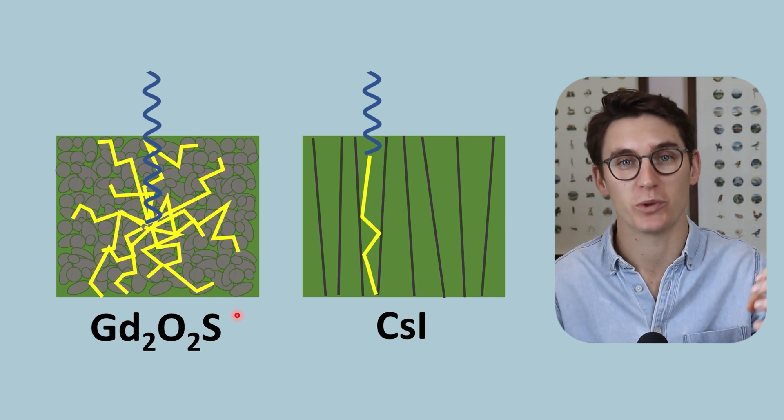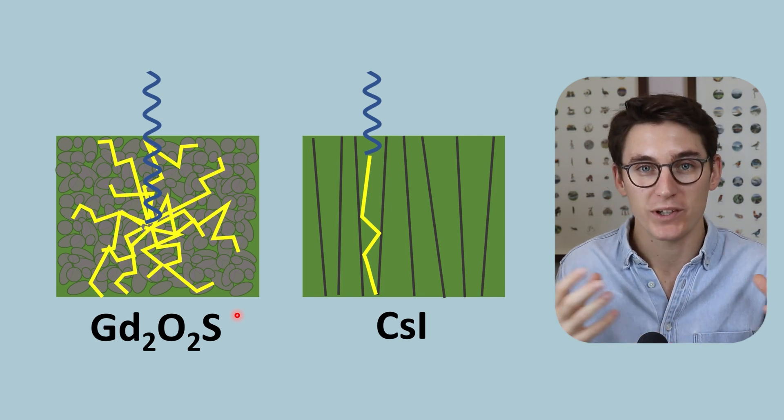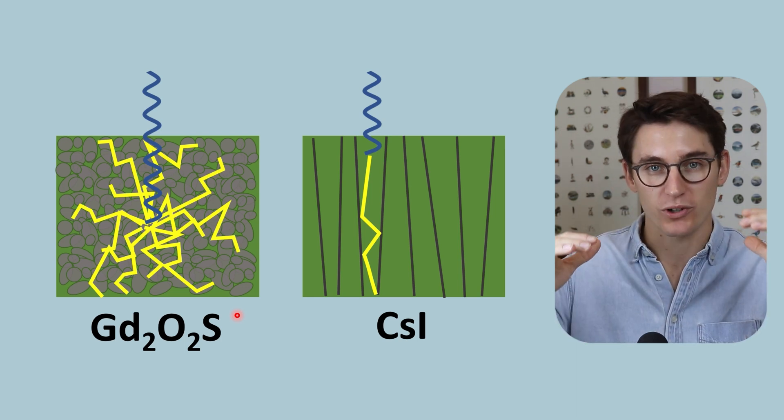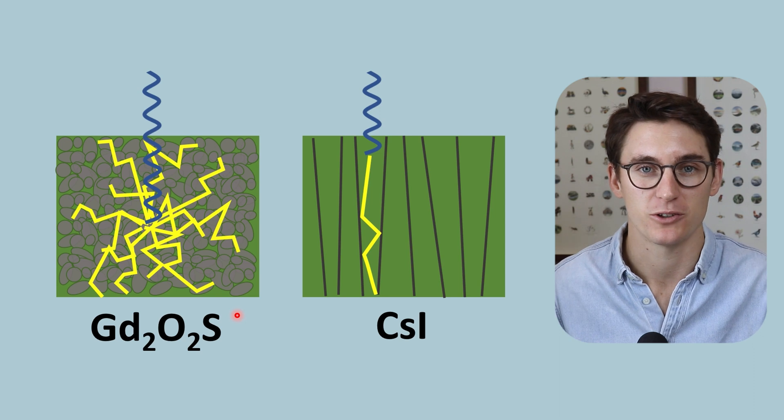We get good signal, we get intense light signal, and we need that intensity in our screen film radiography because we need that energy in order for our silver atoms to be deposited on the film.